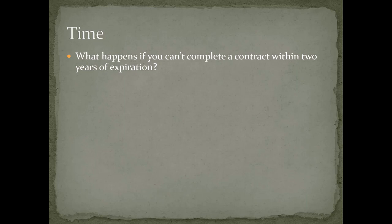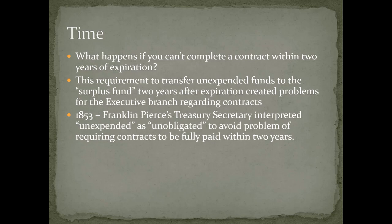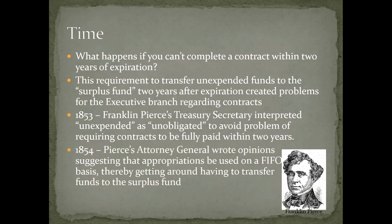But what happens if you can't complete a contract within two years of expiration? This requirement created problems for the executive branch regarding contracts. In 1853, Franklin Pierce's Treasury Secretary interpreted 'unexpended' as 'unobligated' to avoid requiring contracts to be fully paid within two years. In addition, in 1854 Pierce's Attorney General wrote opinions suggesting that appropriations should be used on a first-in, first-out basis, thereby getting around having to transfer funds to the surplus fund.